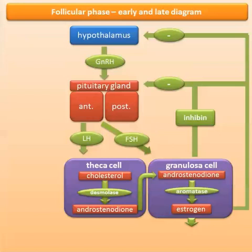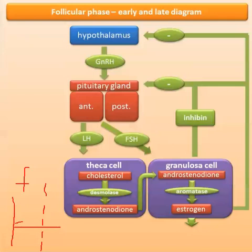The main hormones in the follicular phase are estrogen and FSH. In the hormone graph, you see a small bump in FSH and a steady rise in estrogen as it's produced by the granulosa cell. Normally, estrogen exerts negative feedback on the pituitary and hypothalamus.